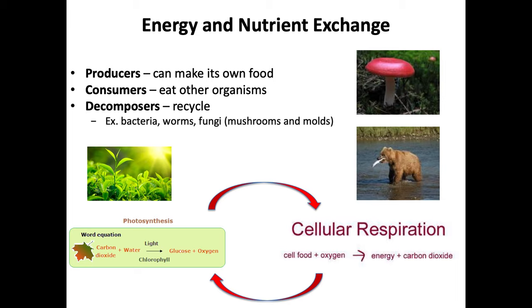In our ecosystem, every organism, every living thing has a role to play. Since we eat other organisms — whether you're a vegetarian who only eats plants or you eat animals as well — we animals are consumers because we eat other organisms to sustain our life. Whereas plants can make their own food; they don't need to consume other organisms. These producers, these plants, use a process called photosynthesis.